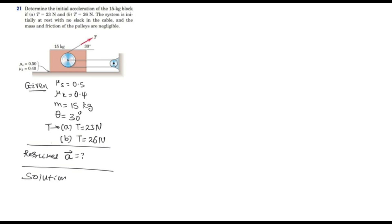Let's draw the free body diagram for the given block. When we pull the cable parts to the right, every tensional force in the string or cable will pull the block in that direction. There will be three tensional forces applied over the system in the right direction.